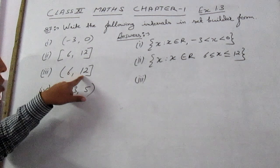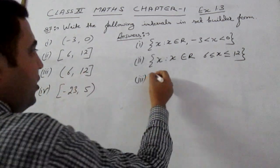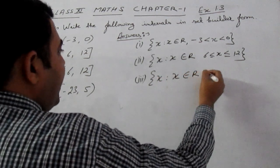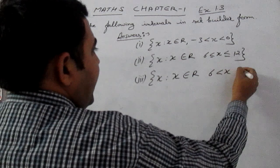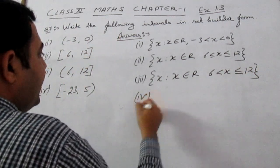Third part (6, 12]. 6 is not included in the interval but 12 is included. So we will write down x is such that x belongs to R, 6 is less than x is less than equal to 12.